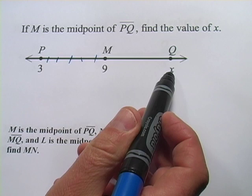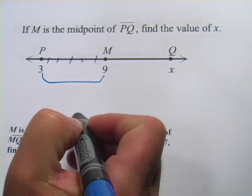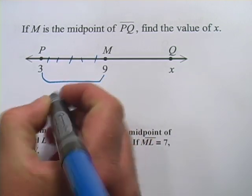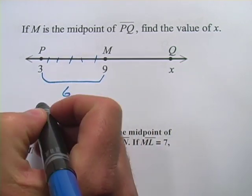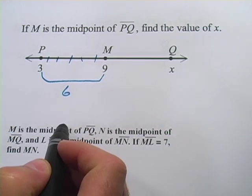The way to figure out what x is, what coordinate that's going to be, is to figure out what this distance is here. From 3 to 9, it's 6. I can get that by subtracting or I could just write off the hash marks here like I did. But the distance is 6.